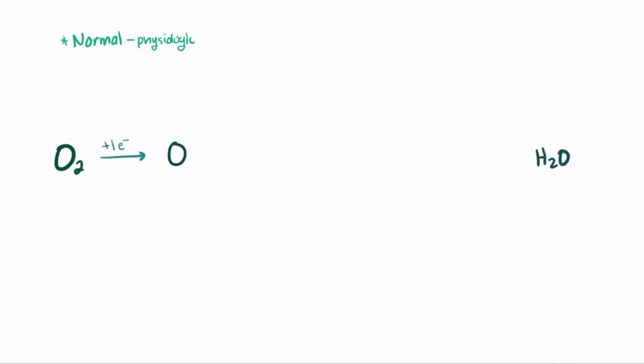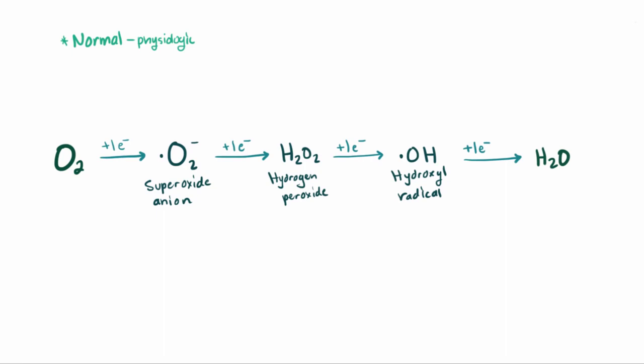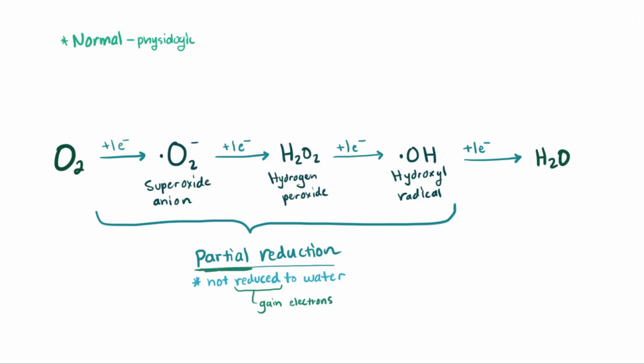Okay, so if oxygen grabs just 1 electron, it becomes superoxide. So O2 with a little dot for its extra electron. If it gets 2 electrons, it becomes hydrogen peroxide. And then 3 electrons, it's the hydroxyl radical. Then finally, if you get all 4, you get water. So 1, 2, or 3 electrons is called a partial reduction of oxygen. So oxygen isn't being reduced all the way to water. Because remember that reduction is a gain of electrons, so in this case it's only partial. And remember that this happens physiologically, like in normal conditions.